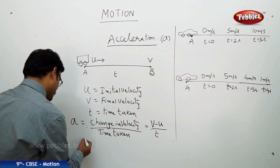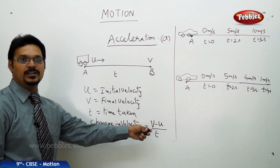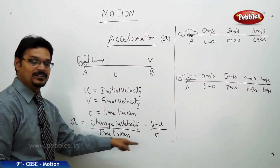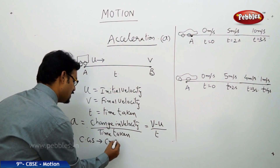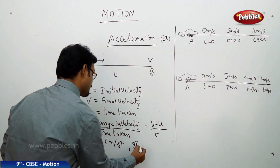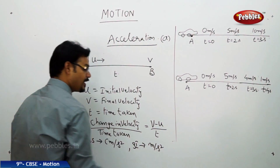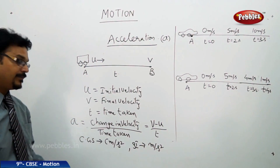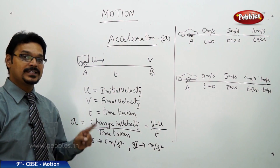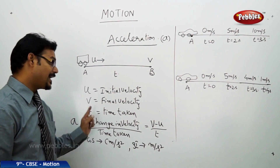Now, what is the unit? In CGS, v minus u in the numerator — you have velocity — so that unit is centimeter per second divided by second. So, it is centimeter per second square. Now, what is the SI unit? Centimeter in SI is meter. So, meter per second square. Remember this unit — do not be confused: meter per second is for velocity or speed, meter per second square is for acceleration.